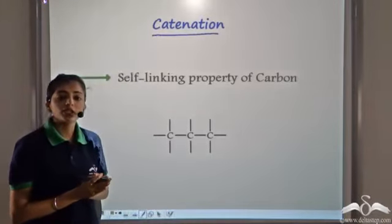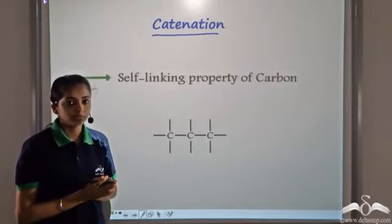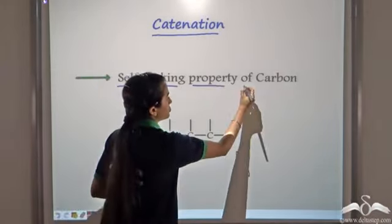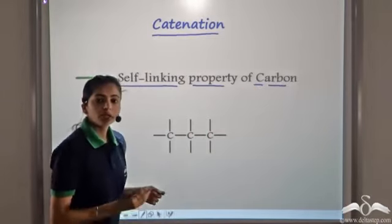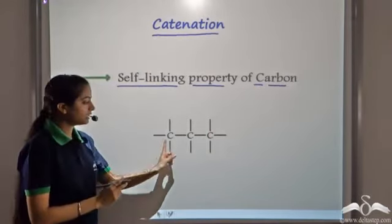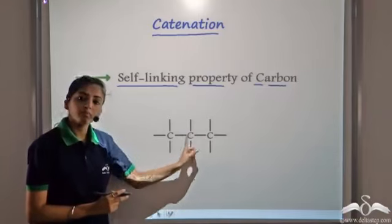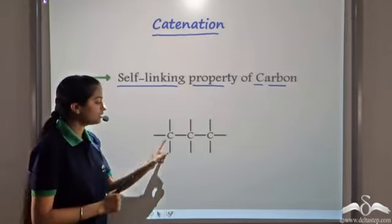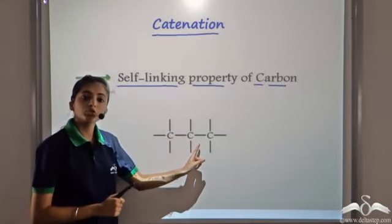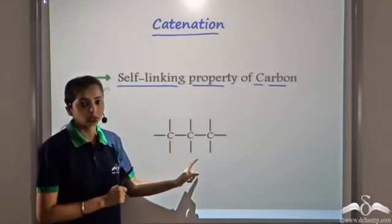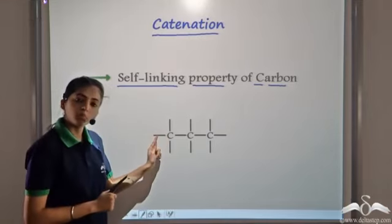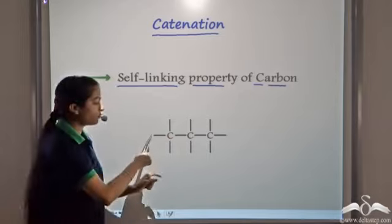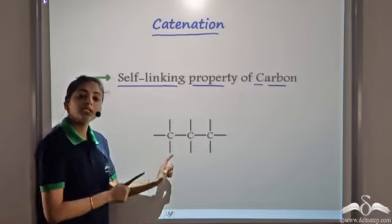Catenation is a very special and unique property of carbon. It shows the self-linking property of carbon. Carbon is a unique atom — it can link to itself by forming covalent bonds. The important thing to keep in mind is that each carbon atom should always satisfy the octet rule, and we know that each bond represents 2 electrons, so we look for 4 covalent bonds in each case.